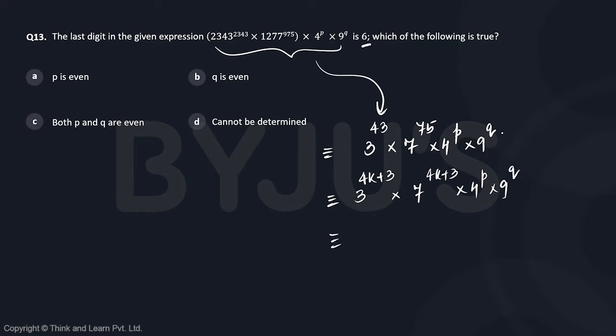3 to the power 4k plus 3 is going to end in 7. 7 to the power 4k plus 3 is going to end in 3.